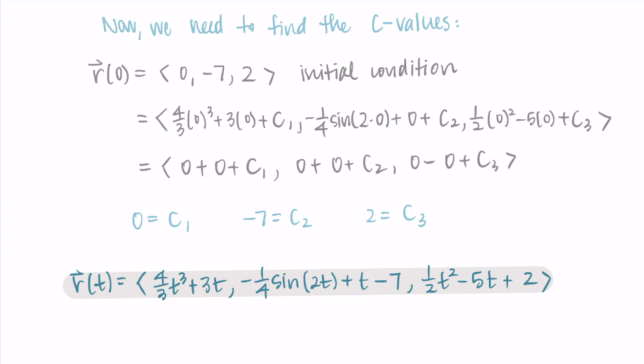That's it for that example. This time we integrated and had to do extra work using the initial conditions to find our specific constant values. These are not the only examples involving position, velocity, and acceleration, but this is a good representation of the types of problems you might see. Thanks so much for watching, and I'll talk to you in the next one.